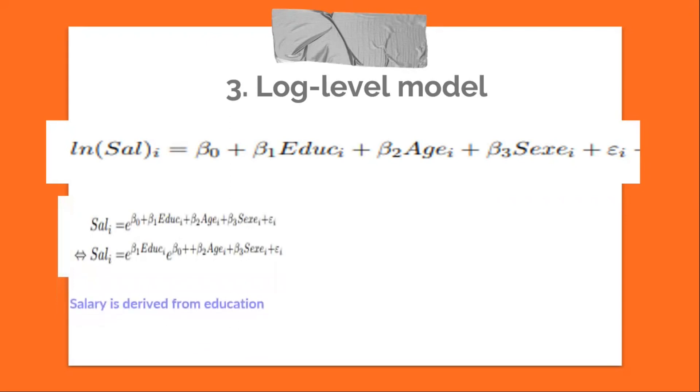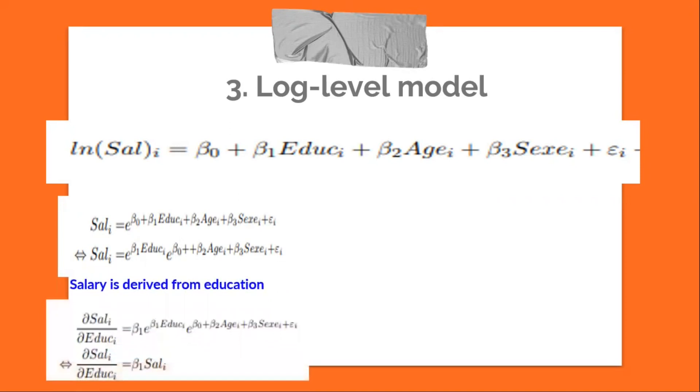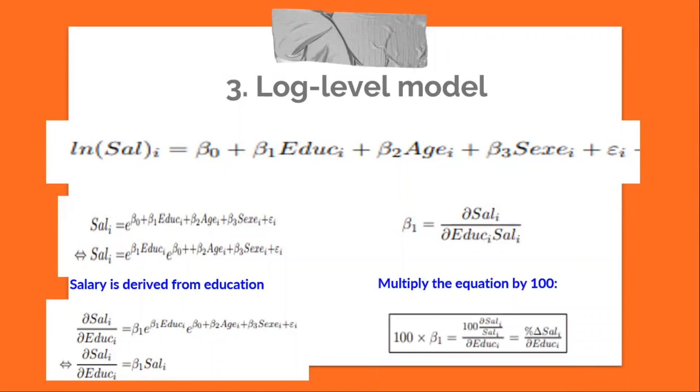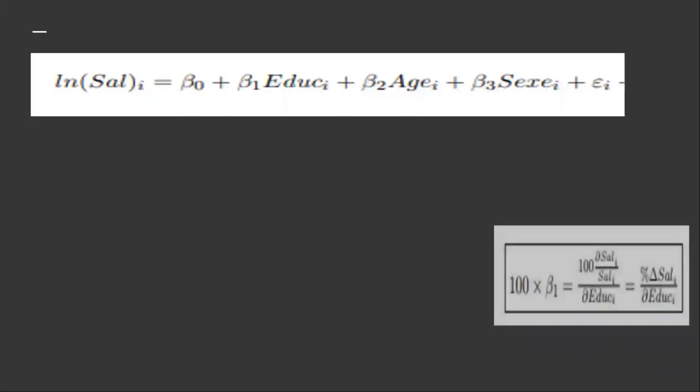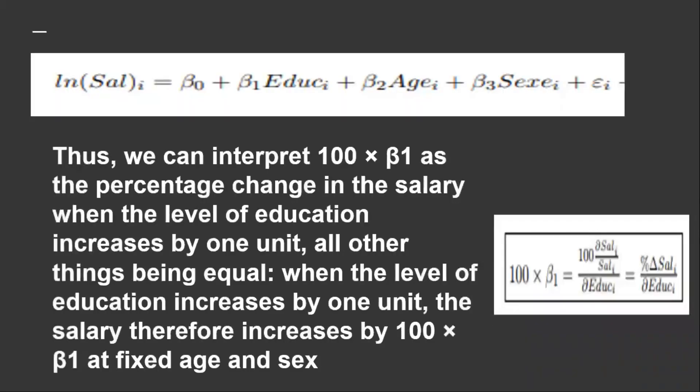We then derive the wage with respect to education, multiply the equation by 100. Thus, we can interpret 100 times beta_1 as the percentage change in the salary when the level of education increases by one unit.